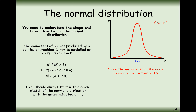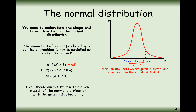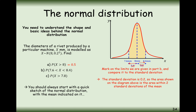This tells us the answer immediately: the probability of a rivet being greater than 8 millimetres is 0.5. For the next part, find the probability that a rivet is between 7.6 mm and 8.4 mm. Since 8 − 7.6 = 0.4 = 2 × 0.2 and 8.4 − 8 = 0.4 = 2 × 0.2, both values are exactly two standard deviations from the mean. Using the key fact that 95% of data lies within two standard deviations, the answer is 0.95.